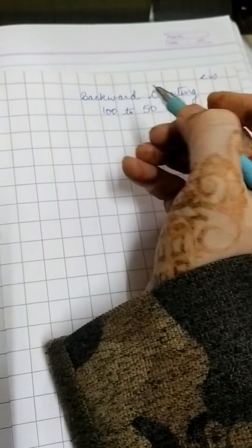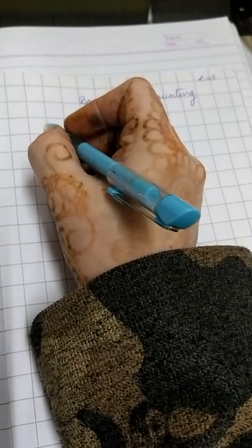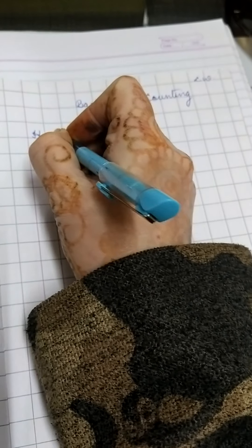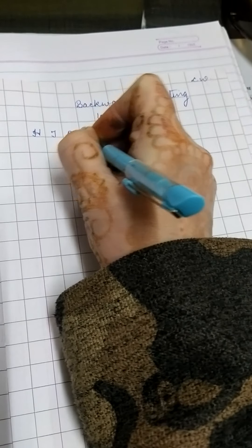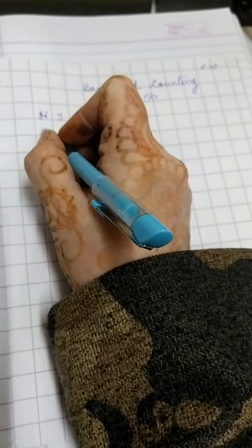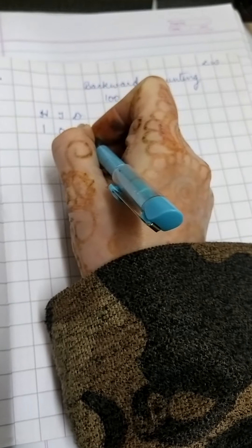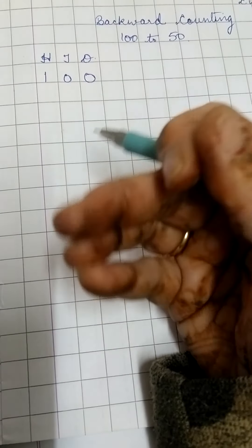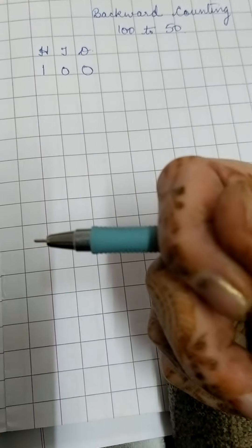Let us start with 100. Now because 100 is 100 tens ones. So let us start 100. Now backward counting means going down the steps.